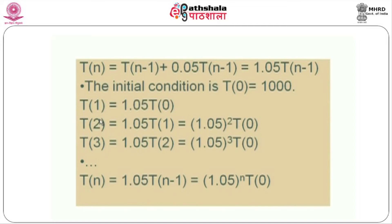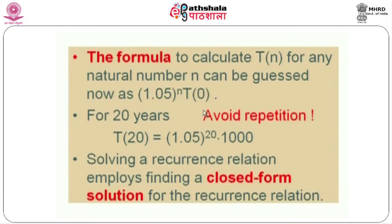Repeating in this manner, for n years it becomes 1.05^n × T(0). This is going to be the solution of this recurrence equation. We want to avoid repetitions — if I want to find how much money will be there at the end of 20 years, I can substitute into this equation: it becomes 1.05^20 multiplied by T(0), the initial condition. By substituting this we can find how much money will be there after 20 years.